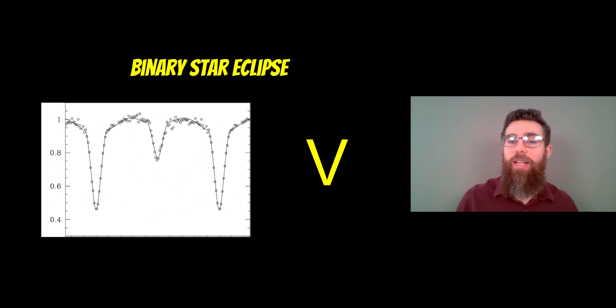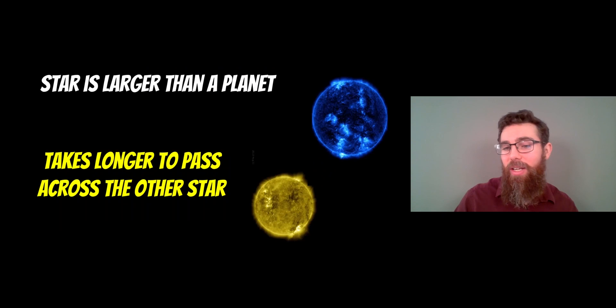A binary star eclipse is more V-shaped. You've got more angled edges to the transit, and you don't have that flat or curved bottom. So why does that occur?